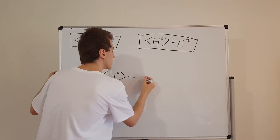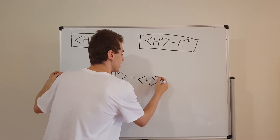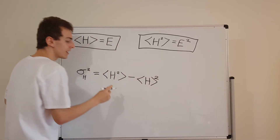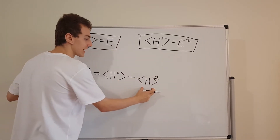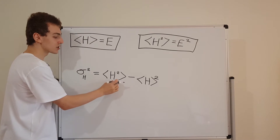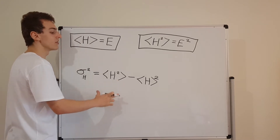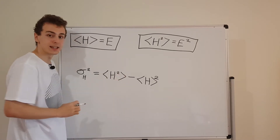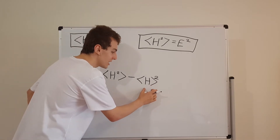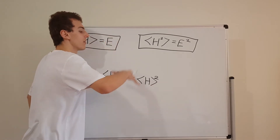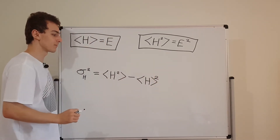...minus the square of the expectation. So H squared here means we're squaring the Hamiltonian and then taking the expectation value. And on the other side, we're taking the expectation value of H first and then squaring whatever that expectation value is.